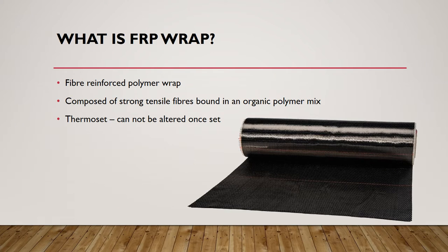Fibre-reinforced polymer, FRP, is a two-part material composed of strong tensile fibres found in an organic polymer matrix. This combination may differ greatly from various kinds of fibres and their arrangement, with a range of polymer resins to create the reinforcing material. Although FRP has an extensive list of applications, it can be used as a strengthening method for reinforced concrete structures and has been a material of research for many decades.